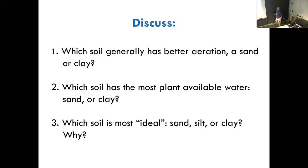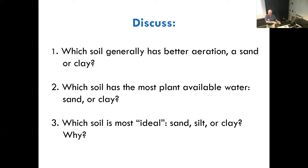Which soil generally has better aeration, sand or clay? Sand — because of more large particles. Which soil has the most plant-available water? A loam — that is the correct answer. These ideal soils tend to be in between. Sands have a lot of large pores and a lot of aeration, and clays have a lot of very small pores with a lot of water retention but not aeration or water transmission. These intermediate loams and silts are the best. That's typically what you find in confluence areas like the Nile delta, the Indo-Gangetic Plain, and the North China Plain — all those intermediate soils.